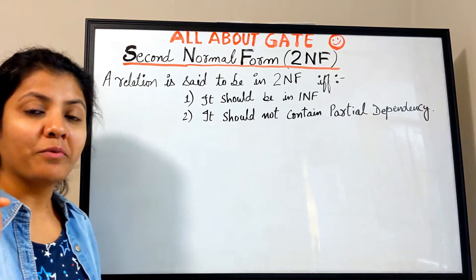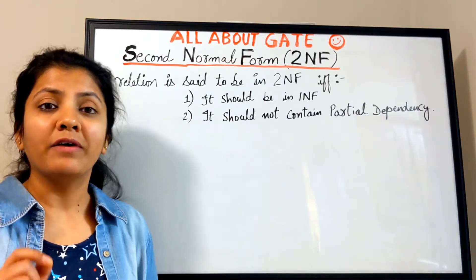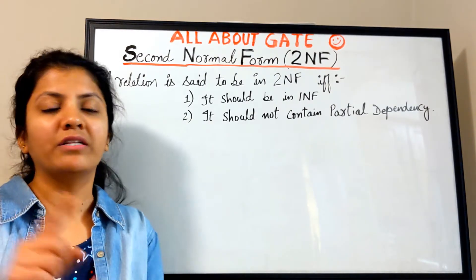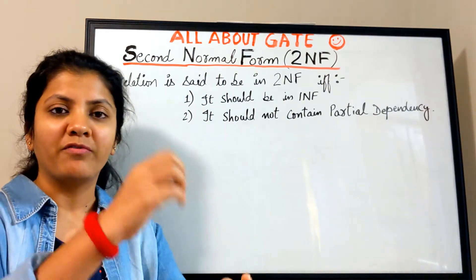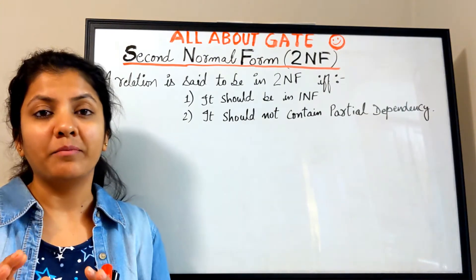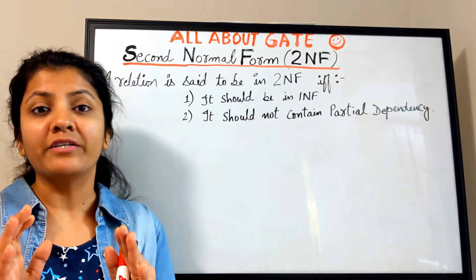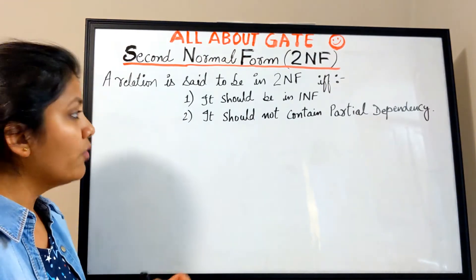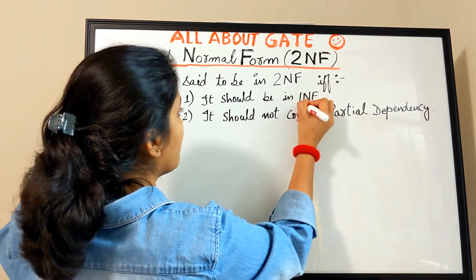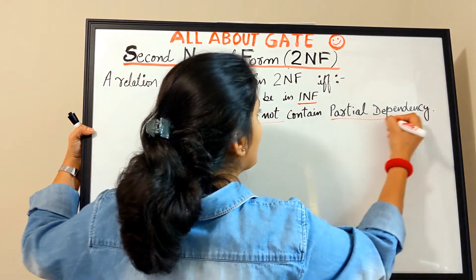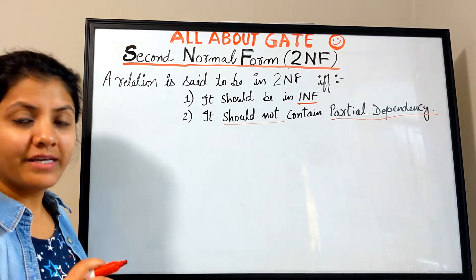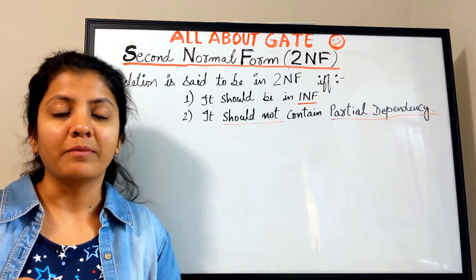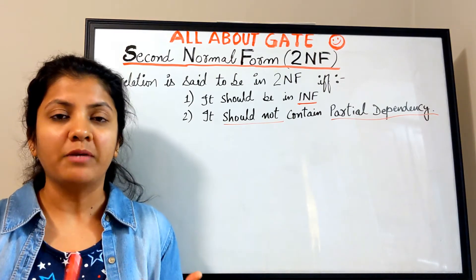Interestingly, 1NF can have partial dependency because 1NF does not concern itself with the type of functional dependencies present. In 1NF, whatever the functional dependency set is, it is allowed as-is. The concern in 1NF is only about the schema — the domain, type, and nature of the attributes. But now in 2NF, we need to look at what a partial dependency is.